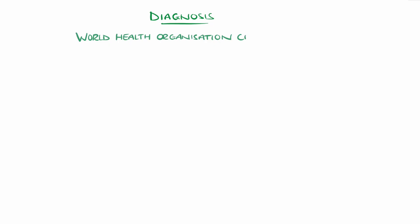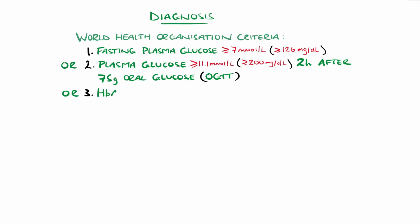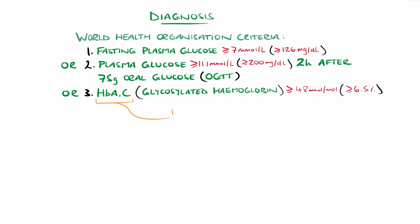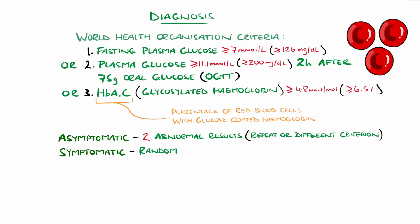The diagnosis is based on evidence of elevated blood glucose. The World Health Organization criteria include fasting plasma glucose above 126 mg per deciliter, a plasma glucose above 200 mg per deciliter two hours after 75 grams of oral glucose, or glycosylated hemoglobin, HbA1c, above 48 mmol per mole or 6.5%, which is a measurement of the percentage of red blood cells that have glucose-coated hemoglobin, giving an estimate of glucose levels over the lifespan of the red blood cells, typically two to three months. In asymptomatic individuals, there must be a repeat or another test on a subsequent day, meaning a total of two abnormal results, whereas in symptomatic patients a random plasma glucose of 11.1 mmol per litre, or 200 mg per deciliter, is diagnostic, or any of the above results.